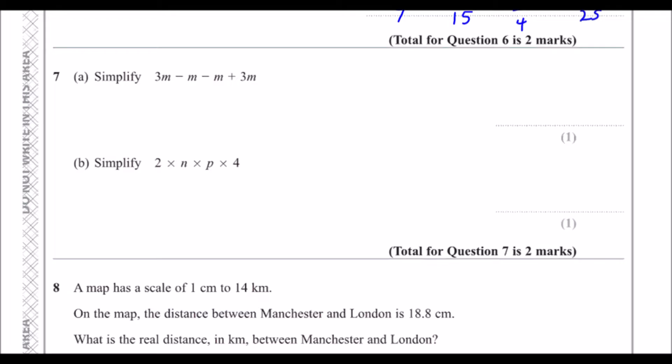Question 7a: Simplify 3m minus m minus m plus 3m. Remember the m's by themselves are 1m. So 3m take away 1m is 2m, take away another 1m is 1m, then plus 3m gives 4m.